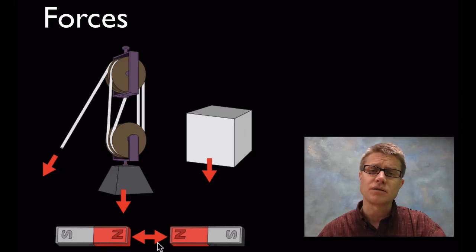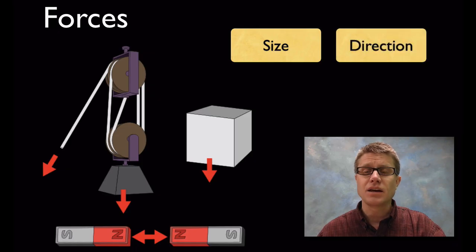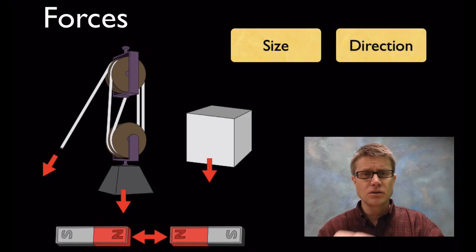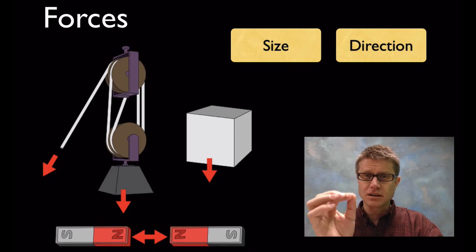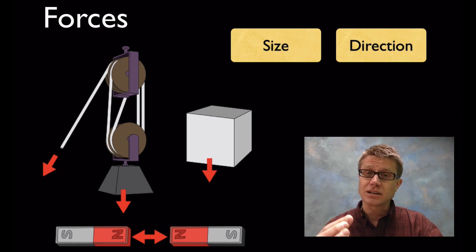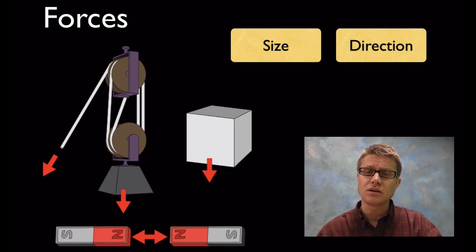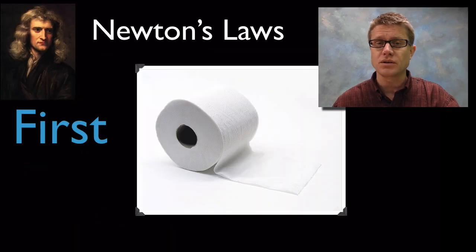There are two properties of every force that are important: the size and the direction. If you've ever played Angry Birds, you know that when you pull the bird back you're pulling it back a different amount — that's the size of the force. And you're pulling it at a different angle — that's the direction. So we should get our students thinking about it that way and starting to use arrows to represent forces.